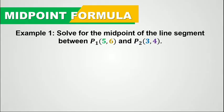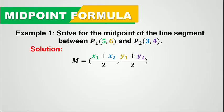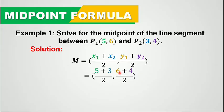In solving this problem, we will simply use the midpoint formula: m equals x1 plus x2 all over 2, and y1 plus y2 all over 2. So x1 is 5 plus x2 is 3, all over 2, and y1 is 6 plus y2 is 4, so 6 plus 4 all over 2.